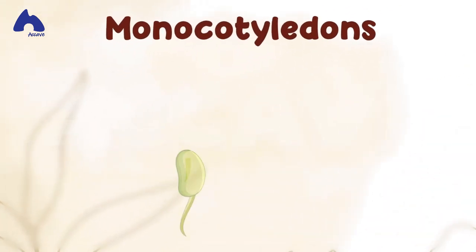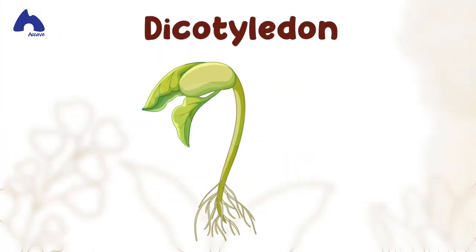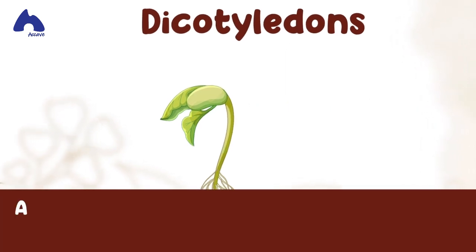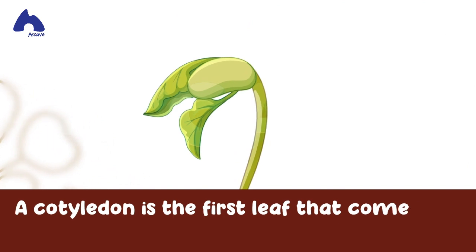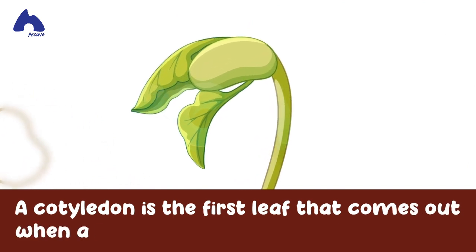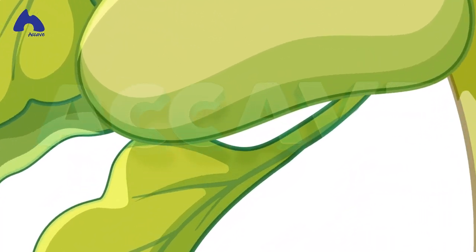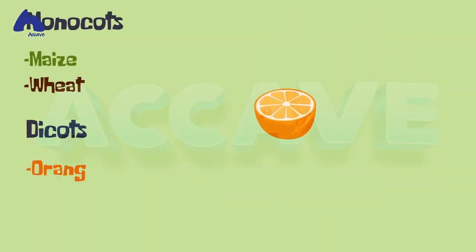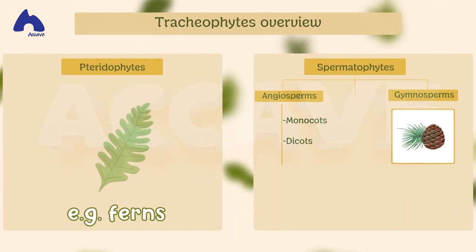Finally, the angiosperms can be further divided into monocotyledons, or monocots — those that have just one cotyledon or seed leaf — and dicots, those that have two cotyledons or seed leaves. A cotyledon is the first leaf that comes out when a seed germinates. Examples of monocots would be maize and wheat, while examples of dicots would be oranges or mango.